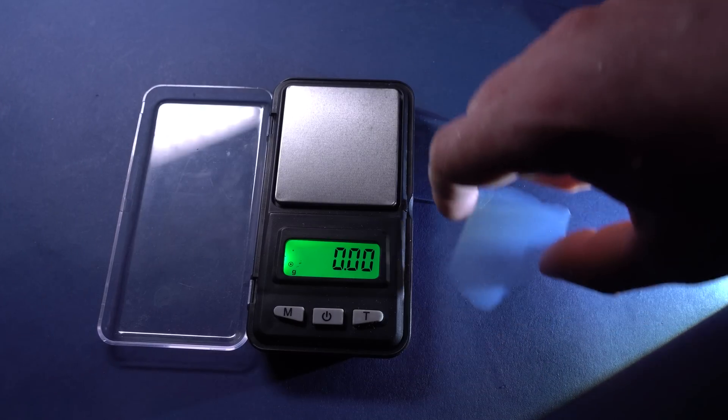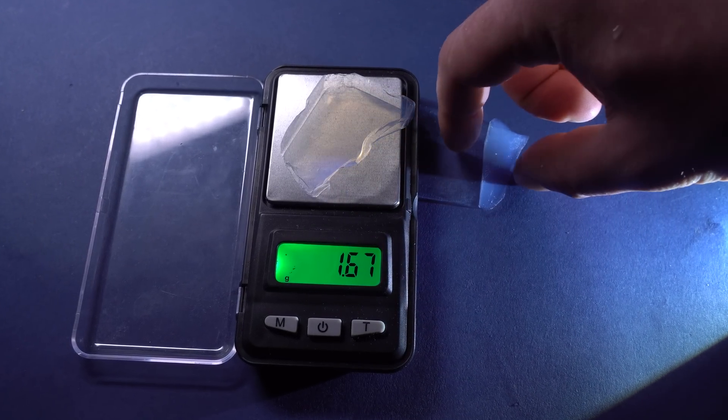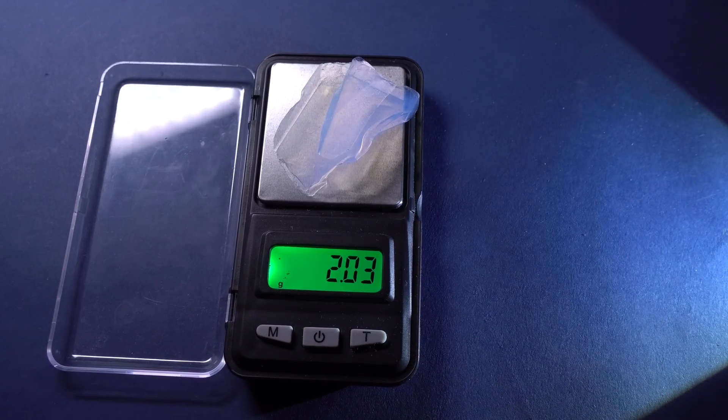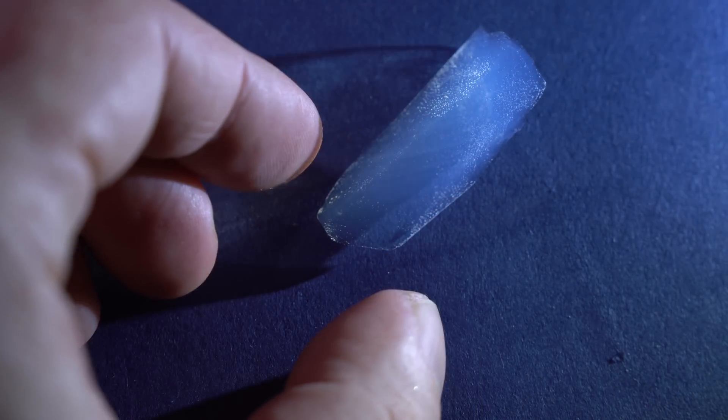Aerogel's density is extremely small – about 1 tenth of a gram per cubic centimeter. The density of aerogels of higher quality can even be compared to that of air. It's not surprising because aerogel mostly consists of air.